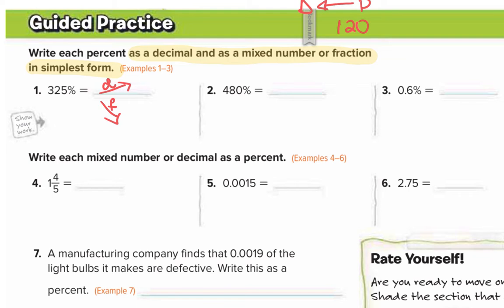325 percent is a percent, so we have to move it two to the left to make it a decimal. When we don't see the decimal point, it's always in the back of the number. If I move it two to the left, I get 3.25 as my decimal.